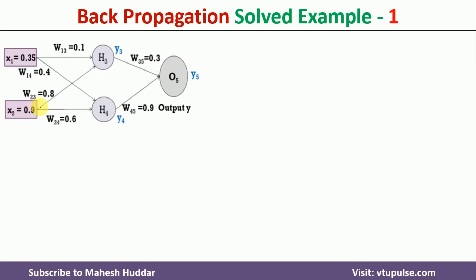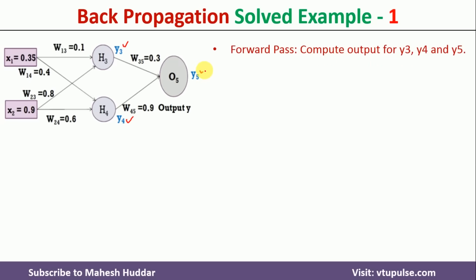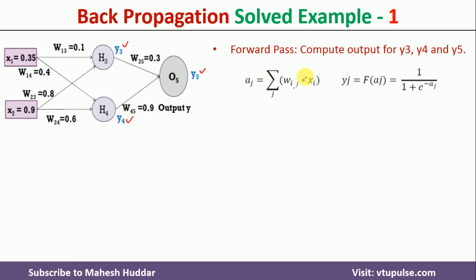Now we will propagate the input through the network — the forward pass. We need to calculate y3 and y4 first; then these are inputs to O5, and we calculate y5. To calculate y3 and y4, we first compute the summation term — that is the sum of wij multiplied by xi — then apply the activation function. The activation function is the sigmoid: 1 divided by 1 plus e to the minus x, where x is the summation term aj.